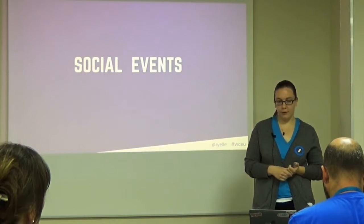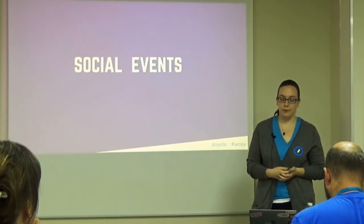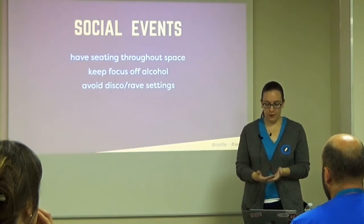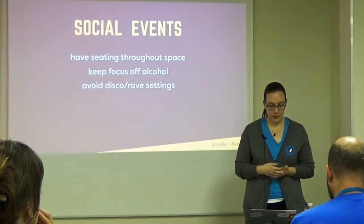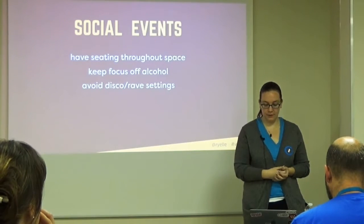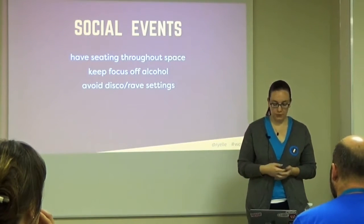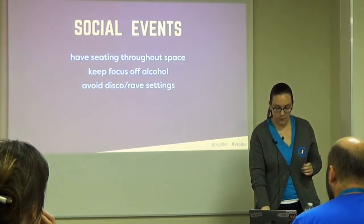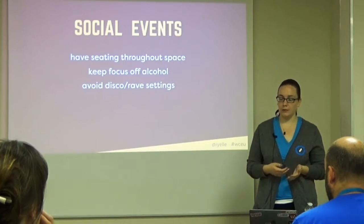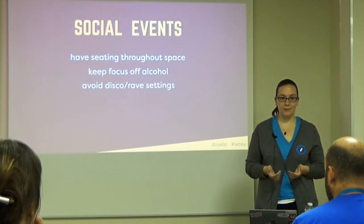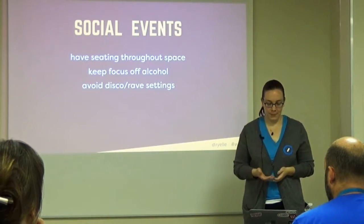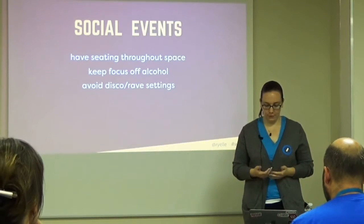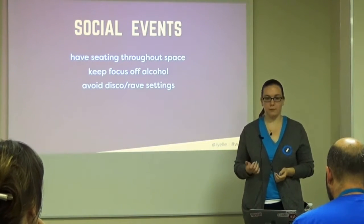Social events — whether a conference after-party or a networking night with your local meetup — should also be as accessible as possible. Everything I've said applies to social events too, including the presentation tips. If you have someone talking to a group of over a dozen people, give them a mic. Have seating throughout the space so that folks can sit and still be included in discussions — not everyone can stand for over two hours. If you have drinks, try to keep the focus off alcoholic ones by also offering mocktails, soda, teas, and water. Label all your ingredients. Avoid loud, flashy spaces like bars with loud music or clubs with strobe lights — these can be overwhelming for autistic people or can trigger migraines and vertigo.